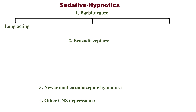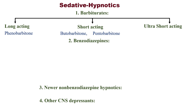Barbiturates may be long-acting, short-acting, and ultra-short-acting. Long-acting is very simple: phenobarbitone. Short-acting: butobarbitone and pentobarbitone. Ultra-short-acting: thiopentone and methohexitone.